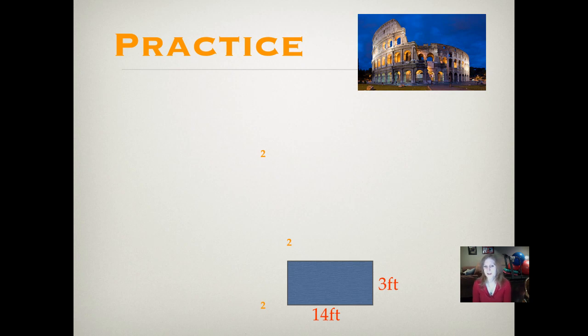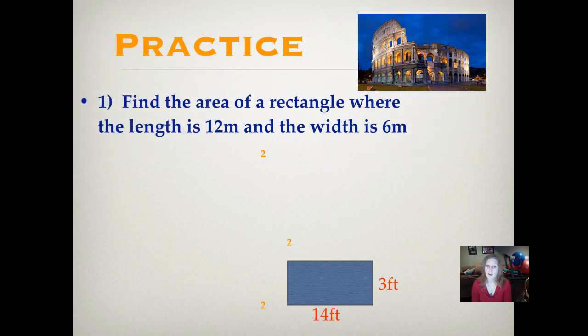Now we're going to do some practices. That is the Colosseum. I think it's a fabulous picture of the Colosseum. I really want to go there someday. Number one, find the area of a rectangle where the length is 12 meters and the width is six meters. You can draw this on your paper if it would help you. Draw a rectangle and label the length 12 meters and the width 6 meters. And then think about your formula. Substitute your numbers for the letters in the formula. Did you write 72 square meters? Six times 12 is 72.